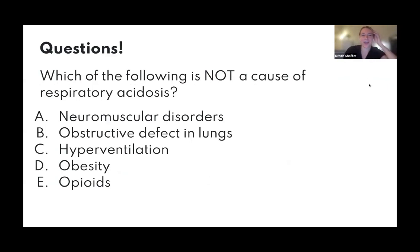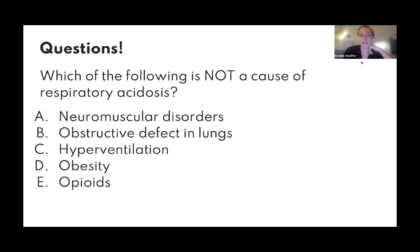Practice question 2: Which of the following is NOT a cause of respiratory acidosis — neuromuscular disorders, obstructive lung defect, hyperventilation, obesity, or opioids? The answer is C — hyperventilation. Hyperventilation is a very common cause of respiratory alkalosis, not acidosis. All the other options cause respiratory acidosis.